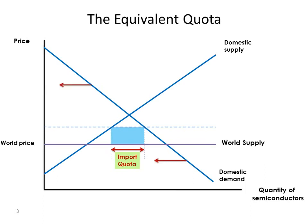So the domestic demand curve is going to shift back by the amount of the quota. This distance here is the same as this distance here — just the quantity of the quota — meaning the domestic demand curve will go here.